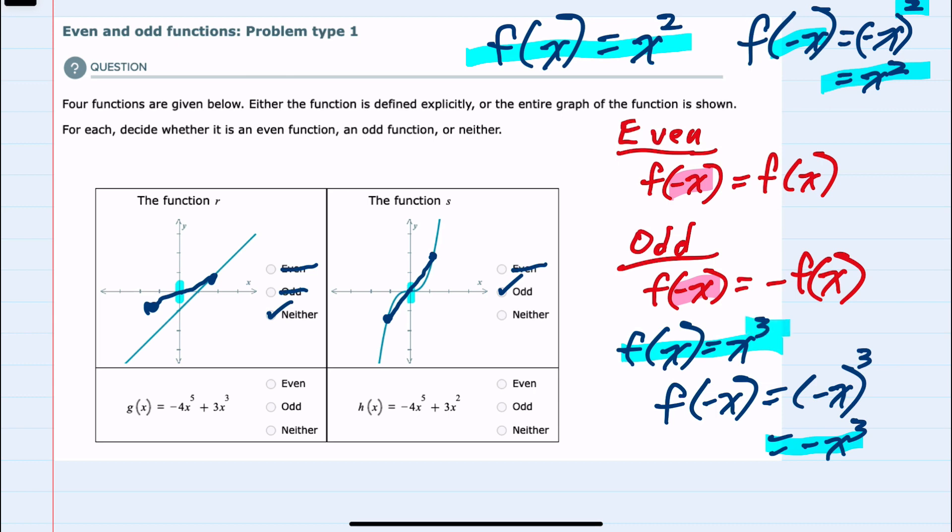So in g(x), we can see we have x in the function twice. And each time it has an odd power. So this will have odd symmetry. However, in h(x), we have both an odd power and an even power. And since we have both an odd and an even power, this will have neither symmetry.